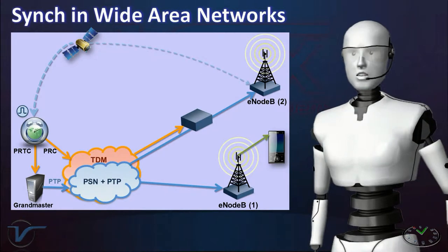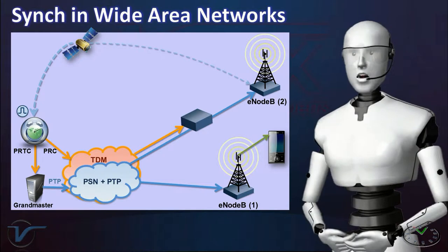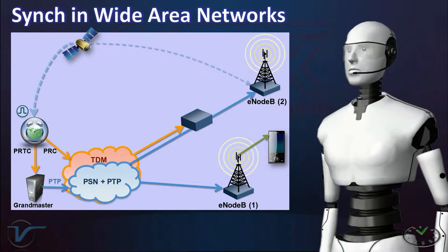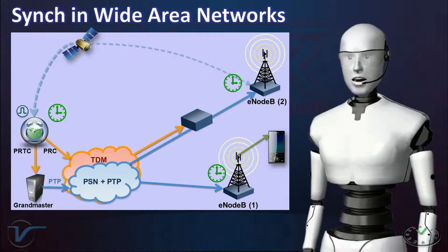As you know, communications networks are geographically distributed systems, with each node separated by kilometers. The idea is that each of those nodes must have the same exact time, or precise time.